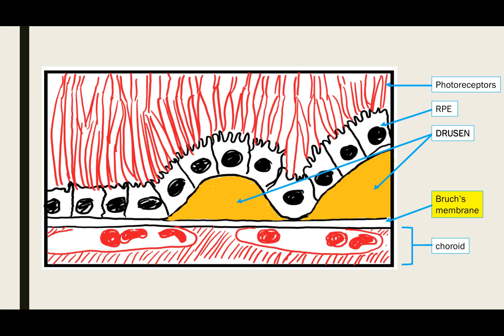Here's a schematic to help you better understand what happens to the retina in AMD. The yellow areas represent drusen, which form from RPE secretions. When those secretions do not flow across Bruch's membrane and instead accumulate under the retina, the RPE experiences structural distortion. Ultimately, the RPE and photoreceptors experience ischemia and atrophy, resulting in vision loss.